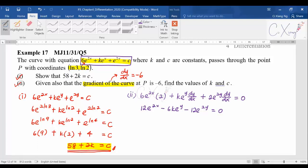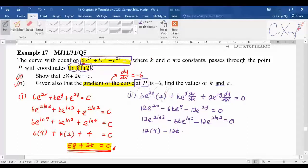Again you have to substitute back ln 3 and ln 2 into this differentiation equation, because they say the gradient of the curve at point P. What is point P? (ln 3, ln 2). So you start doing it again. You have 12e^(2ln3) - 6ke^(ln2) - 12e^(2ln2) = 0. When you simplify from here, you'll get 108 - 12k - 48 = 0.